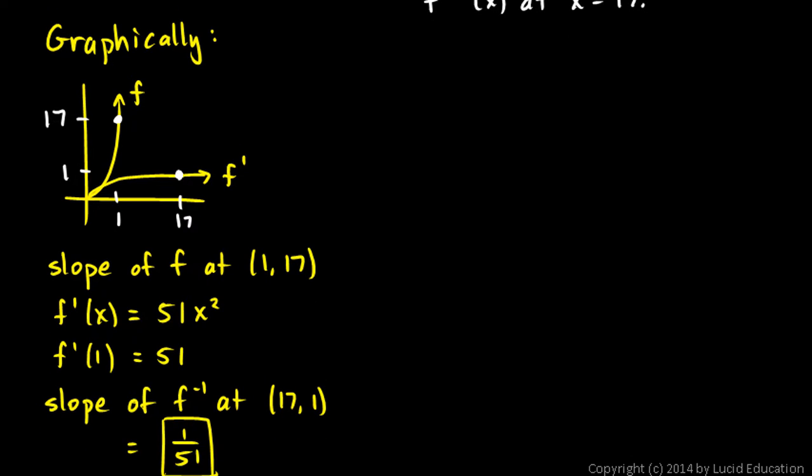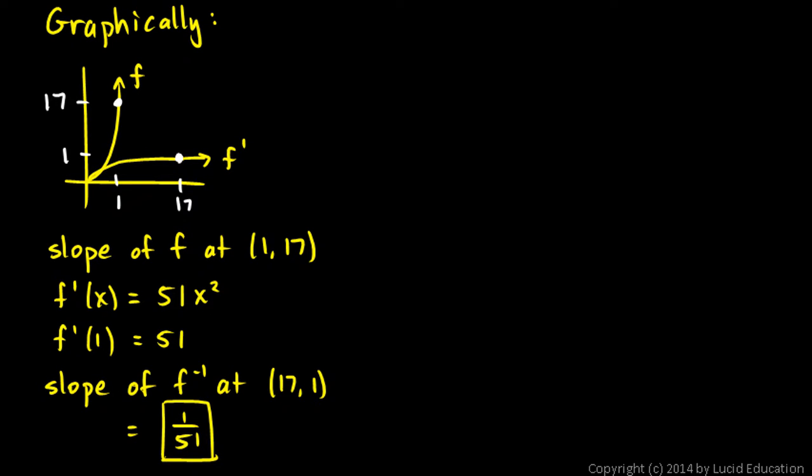And we used the fact that the slope of a function at a given point is always the reciprocal of the slope of the inverse function. Or you could say it the other way. You could say the slope of an inverse function is always the reciprocal of the slope of a given function at the corresponding points. In this case, this point is the point that corresponds to that point, in that those points are reflections of each other across the line y equals x.